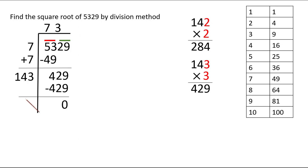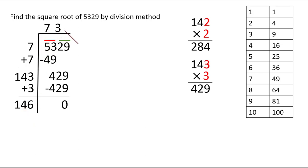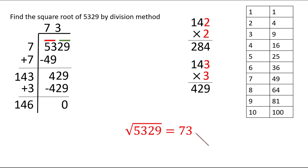We add a 3 because we wrote a 3 above, giving 146. 73 doubled is also 146. But the answer to our question is 73. So the square root of 5329 is 73.